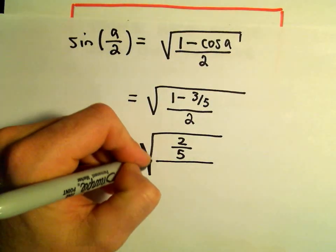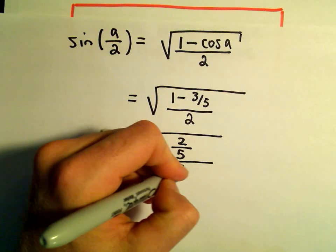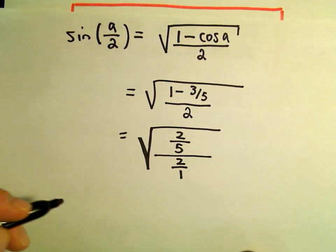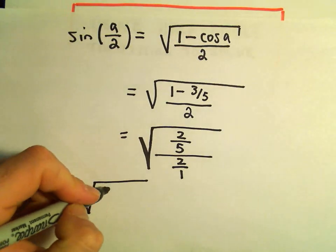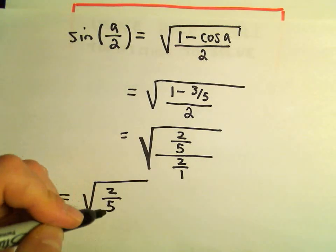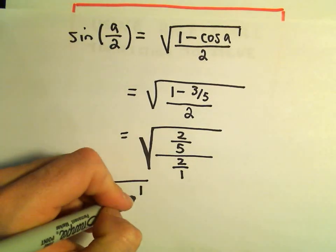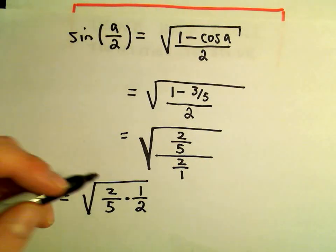The denominator, this is all still under the square root. We can write 2 as simply 2 over 1. So underneath the square root, I've got a fraction divided by a fraction. So we can write that as 2 fifths times, we could flip and multiply by the denominator, 1 over 2.